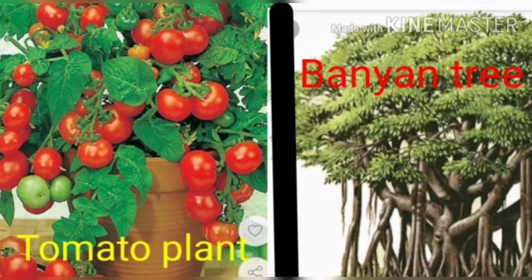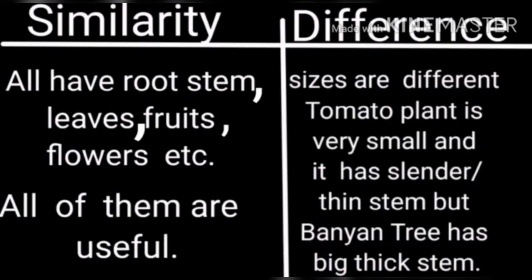Similarity: all have root, stem, leaves, fruits, flowers, etc. All of them are useful. Difference: sizes are different.